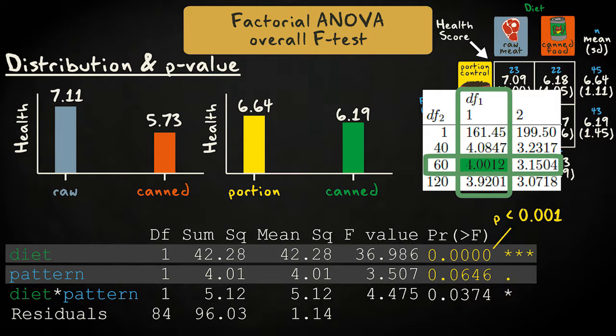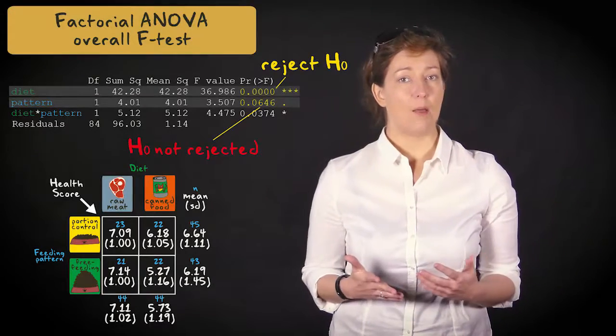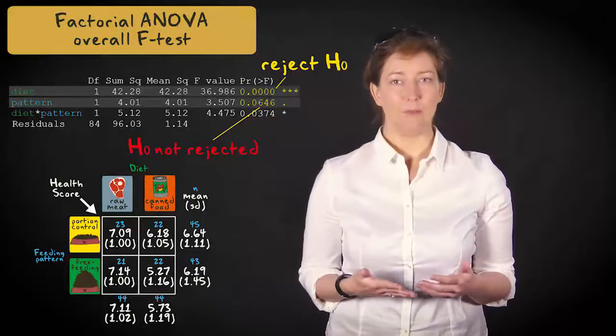P-values as tiny as the one for diet are usually reported as smaller than 0.001. We can reject the null hypothesis for the main effect of diet, but not for feeding pattern.